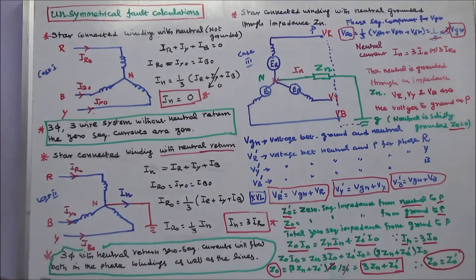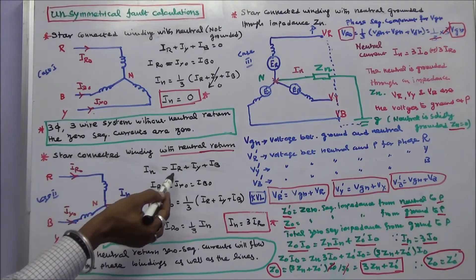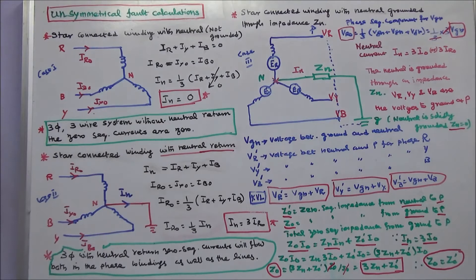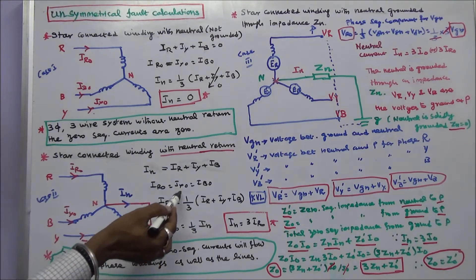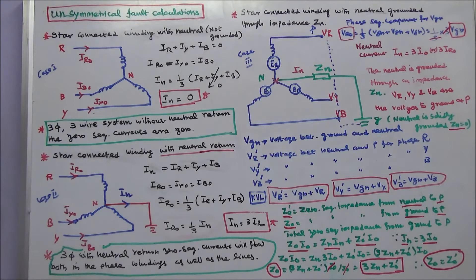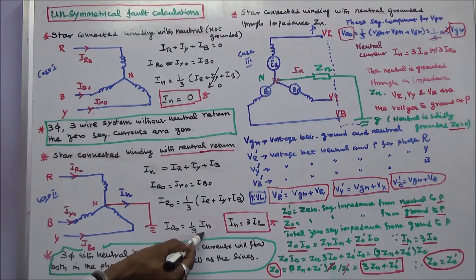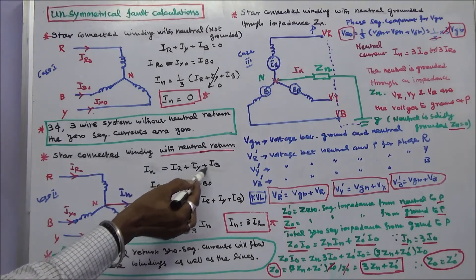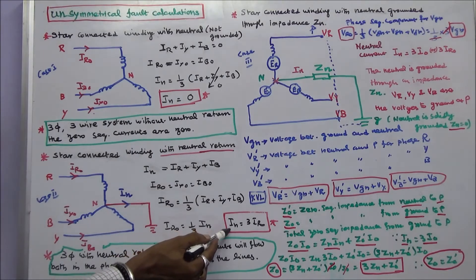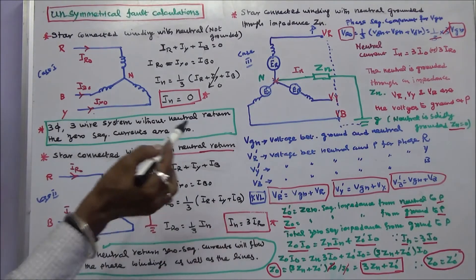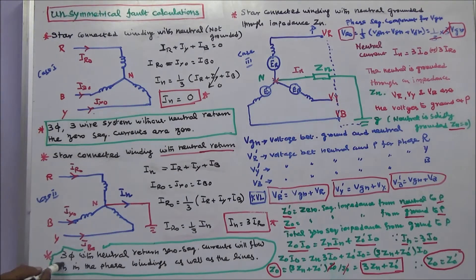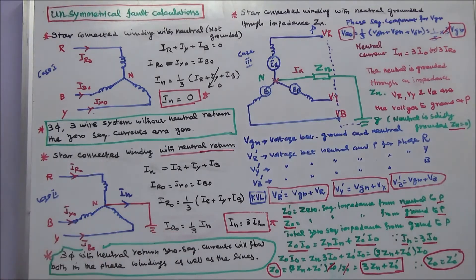Case 2: star-connected winding with neutral wire grounded. Here neutral current IN equals IR plus IY plus IB, and IR0 equals IY0 equals IB0. Therefore IR0 equals one-third times IN, meaning the neutral current IN equals 3 times the zero-sequence current IR0. In a three-phase system with a neutral wire, zero-sequence current will flow both in the phase windings as well as the lines.